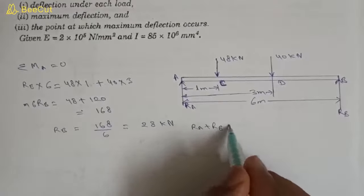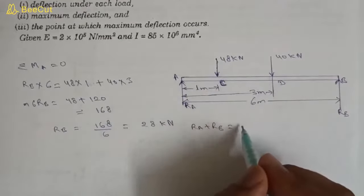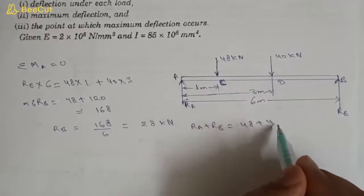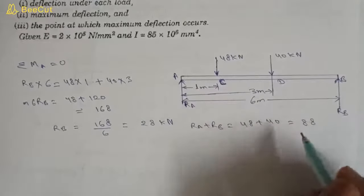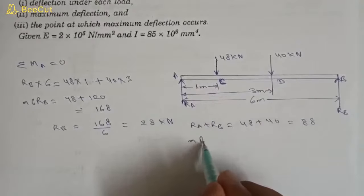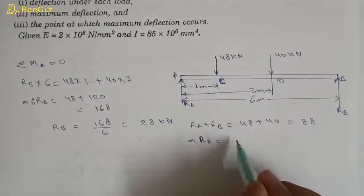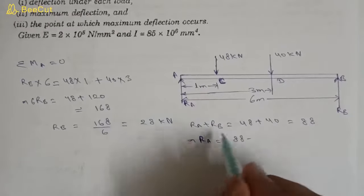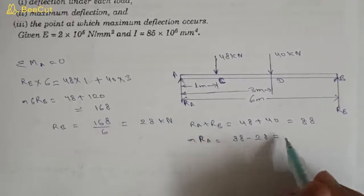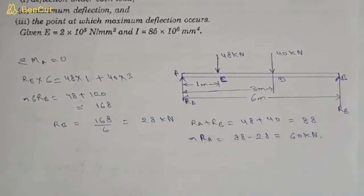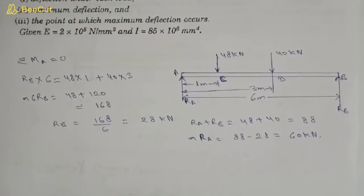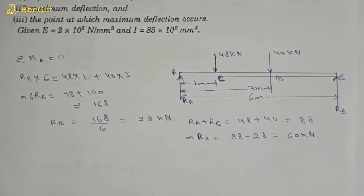Now RA plus RB equals the sum of the two loads: 48 plus 40 equals 88. So RA equals 88 minus RB, which is 28, giving RA equals 60 kilo-newtons.